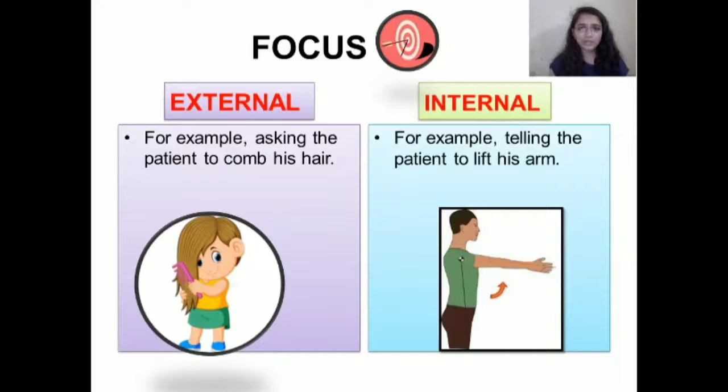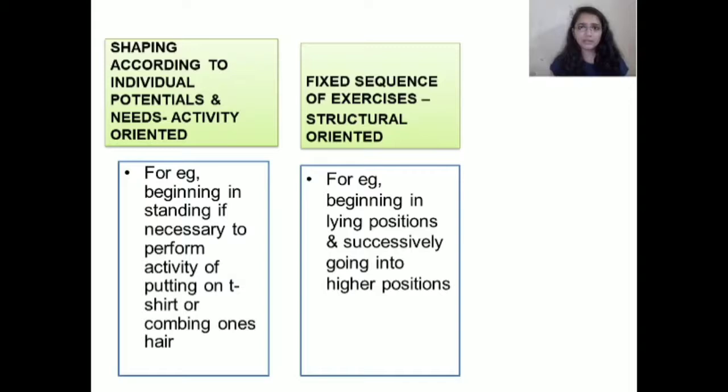The next principle is contextual factors. Contextual factors are important because the patient wants to perform activities within a certain environment. Thus, shaping activities according to the patient's needs is key — for example, asking the patient to put on a t-shirt in standing or sitting, as opposed to treating the external rotators starting from lying and progressing to standing only as range or strength improves.